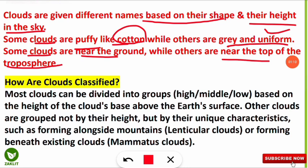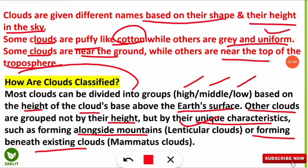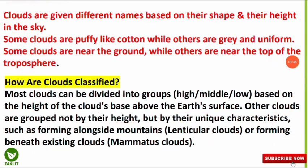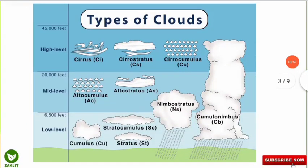But how are these clouds classified? Mostly the clouds are divided into three groups — high clouds, middle clouds, and low clouds — based on the height of the cloud base above the earth's surface. Other clouds are grouped not by their height but by unique characteristics; for example, lenticular clouds are formed alongside mountains, and mammatus clouds are formed beneath existing clouds.